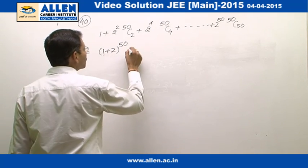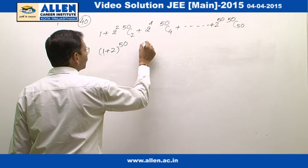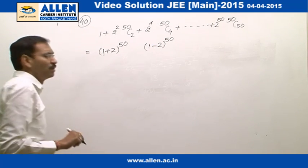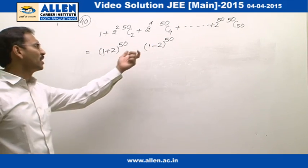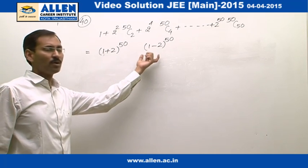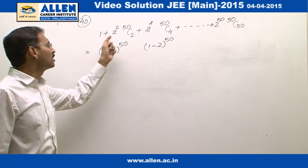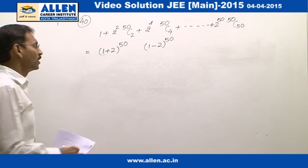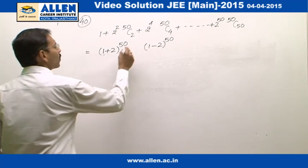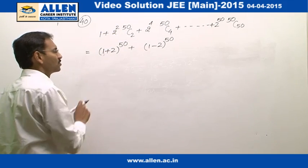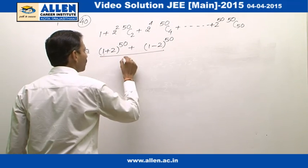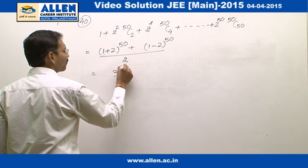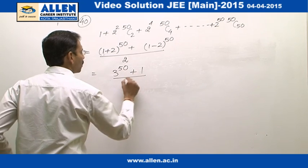Similarly, the terms are contained in the expansion of 1 minus root 2, raised to the power 50. The terms will be alternatively negative and positive, so undesirable terms will cancel and desirable terms will be added. Therefore, adding these two expansions gives twice the required expression. Dividing by 2, we get 3 raised to the power 50 plus 1, upon 2.